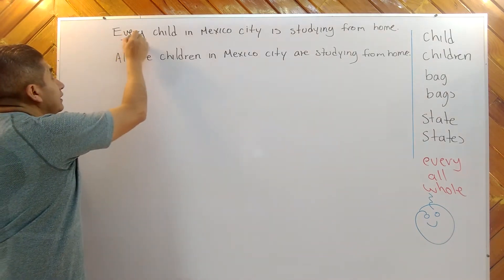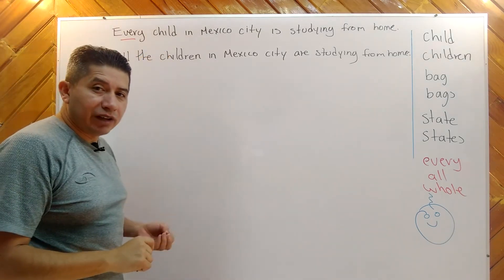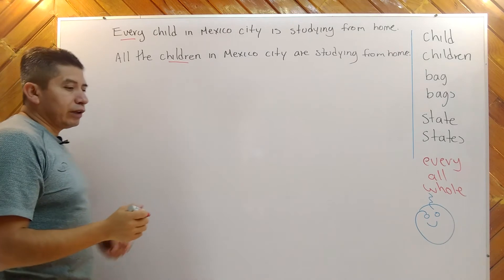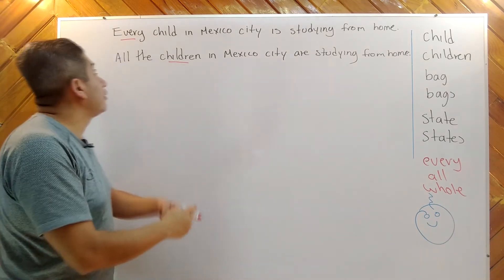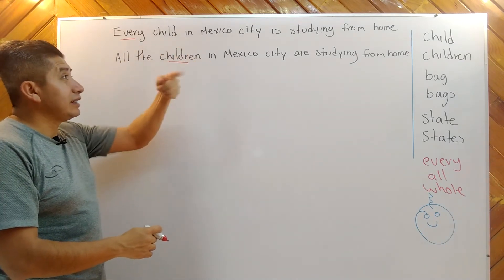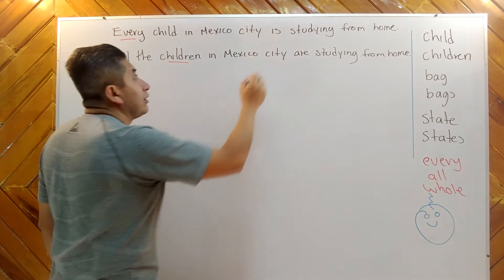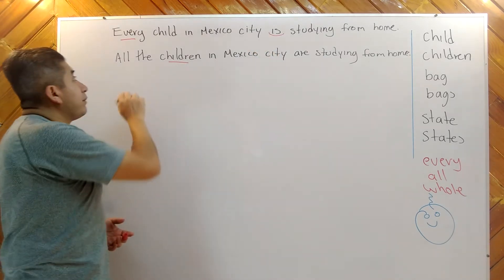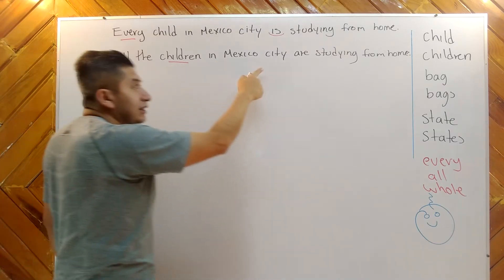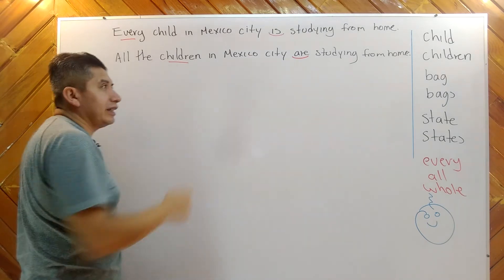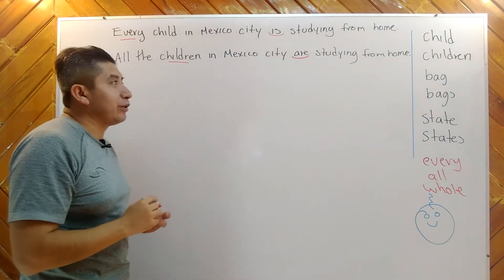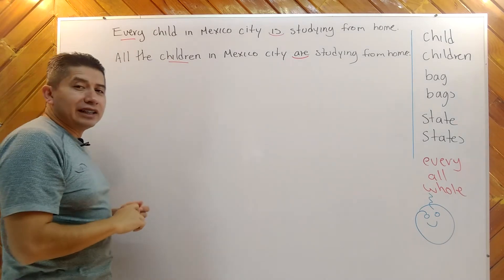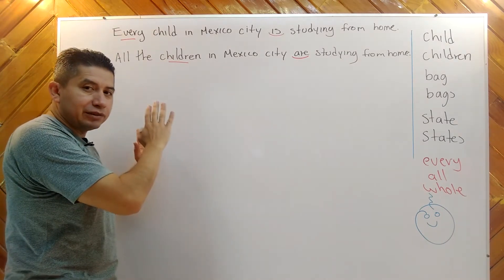Utilicé every con child. Recuerden que child es singular y children es plural. Cuando algo es singular y mencionamos de uno en uno, vamos a utilizar every — every child in Mexico City is studying from home. Y si notaron, estoy utilizando is. Cada niño, al ser singular, utilizo is. Sin embargo, all the children — todos los niños — in Mexico City, ahora utilicé are, porque todos los niños está en plural. That is very important. Every lo usamos con singular, y all the, en este caso, lo usamos con plural.